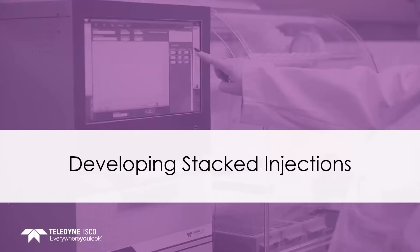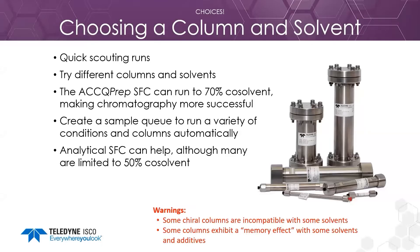Developing stacked injections has two parts: screening columns and solvents, and then determining the mobile phase composition and loading. The first step is choosing a column and solvent — you run different combinations and choose the best one. This is often done even if you aren't running stacked injections, just to get the best chromatography for a compound. Screening can be done on an analytical system, but many are limited to 50% co-solvent, while the Acuprep can run up to 70% co-solvent reliably. Make sure the co-solvent is compatible with the column.